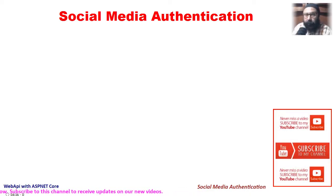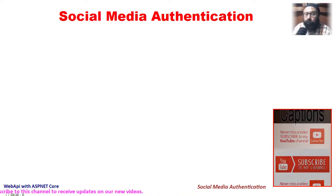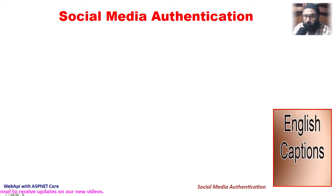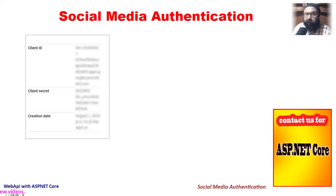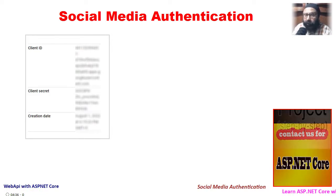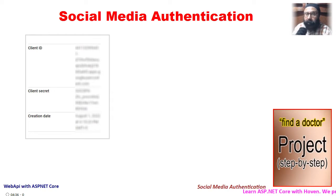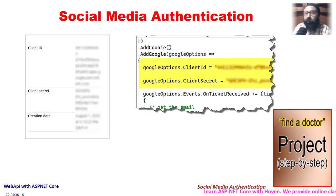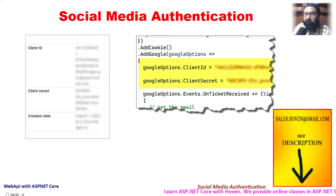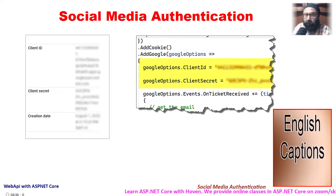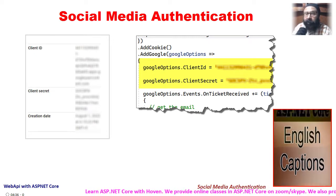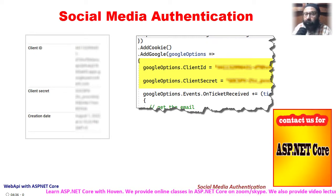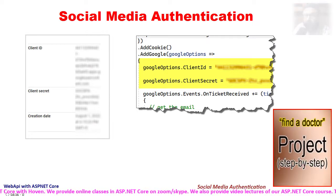Web APIs can be protected through social media authentication. The first step is to obtain a client ID and a client secret by creating an app on a social media platform. Then these values are used to configure authentication services for that platform. In this tutorial, we present the sequence of steps required to gain authorization to a Web API protected by Google Authentication.